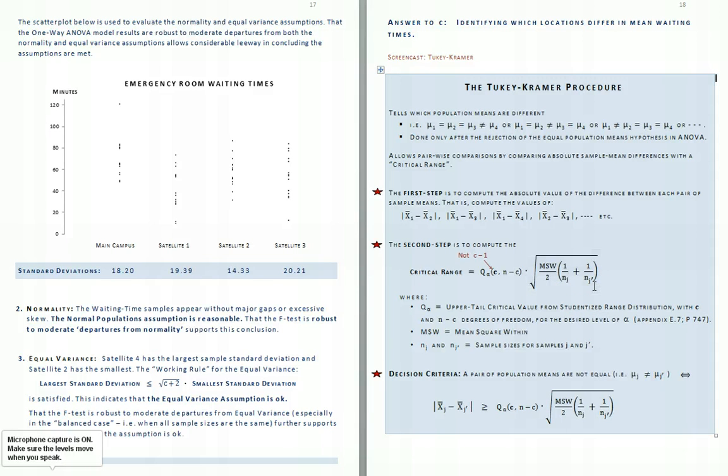Now, our examples will all be the balanced case, where the number of sample observations in each sample are going to be the same. For our emergency room waiting room times, every sample has exactly 15 observations. That means for us that we'll only need to make one numerical calculation for a critical range that we can use for each pair of means.